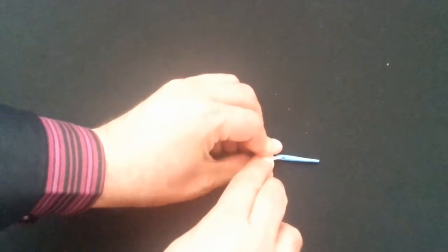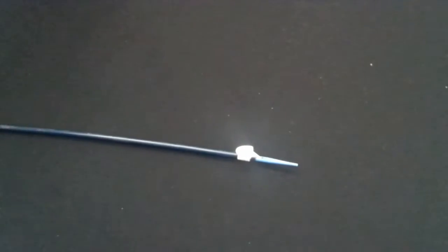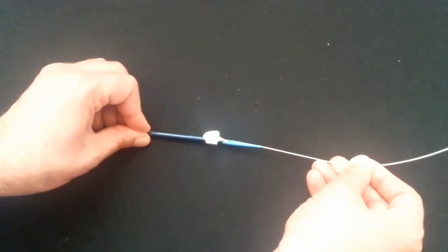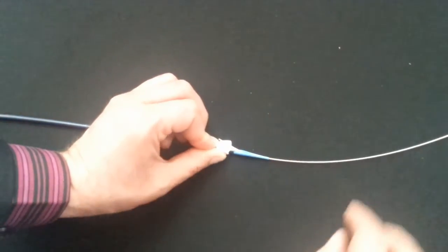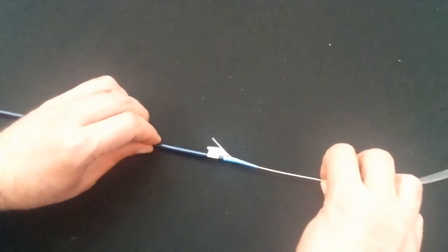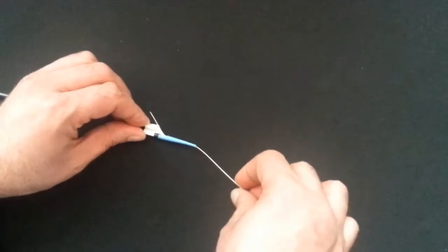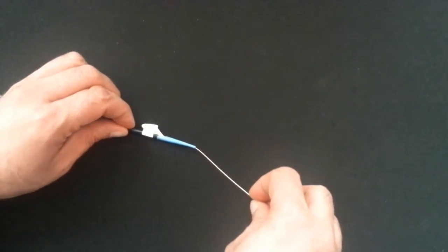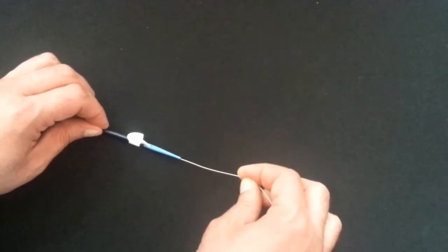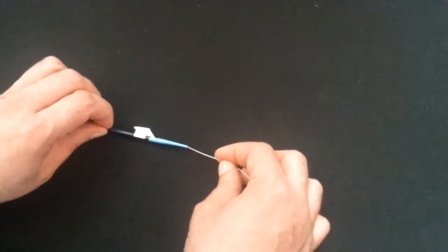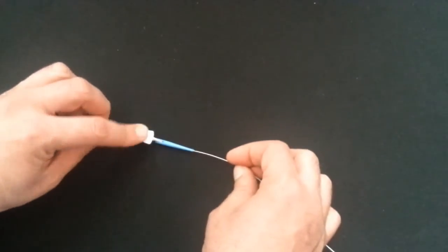Either for the stiff end of the guide wire, but also for the floppy tip of the guide wire. Sometimes there is difficulty to backload the guide even with the backloading clip.